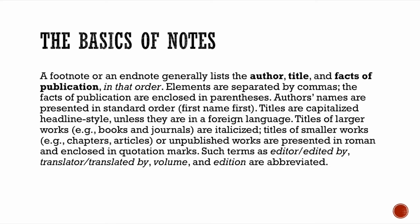Now there's also a difference between notes — footnotes or endnotes — and bibliographic references, which go at the end of an article or a book. The footnotes or endnotes generally list author, title, and facts of publication in that order. Also note that the author's names are written in standard order, first name first, last name last. All titles are capitalized unless they're in a foreign language. Most titles are italicized. However, if you're talking about a book chapter or an article, those are put in quotation marks. When you're looking at editors, translators, and volume numbers, those come afterward.